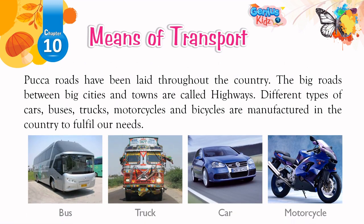Paka Roads and railways have been laid throughout the country. The big roads between big cities and towns are called highways. Different types of cars, buses, trucks, motorcycles, and bicycles are manufactured in the country to fulfil our needs.